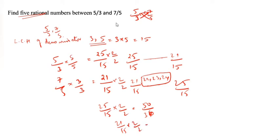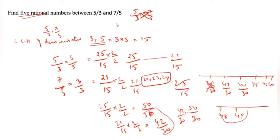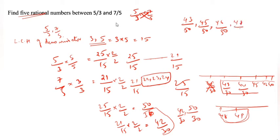21 by 15 into 2 by 2 equals 42 by 30. Both denominators should be same. So, now 50 by 30 comma 42 by 30. In between: 43 by 30, 44 by 30, 45, 46, 47, 48, 49. Here 42 don't take, in between only — between means 43 to 49. There are 7 rational numbers, any 5 we can take. I will take 43 by 30, 45 by 30, 46 by 30, 48 by 30, 49 by 30. These are the 5 rational numbers.